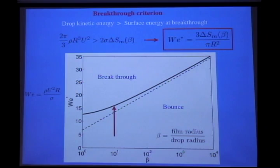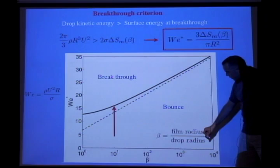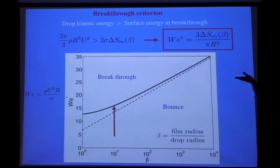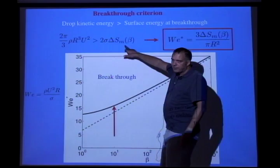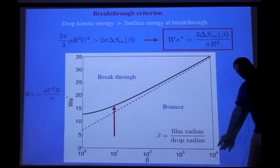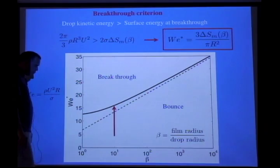Our breakthrough criterion: the result depends on the beta parameter, which is the film radius to the drop radius. The criterion for breakthrough is that the initial drop kinetic energy is greater than the surface energy at breakthrough. To break through, the interface basically comes down like a catenoid and then goes vertical — if you go beyond that it breaks through. You can calculate the surface energy at this point if you know the size of the drop and the size of the ring. For our experiments done with beta equals 10, this predicts a critical Weber number of around 15, which is exactly what we had. This gives us confidence in the linear spring model of the soap film.